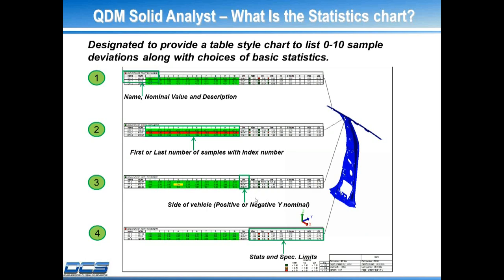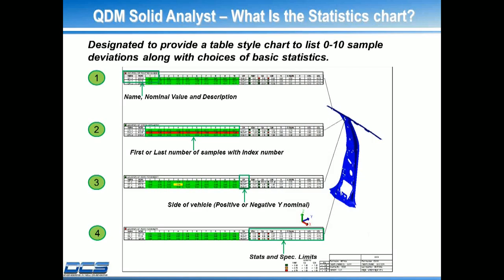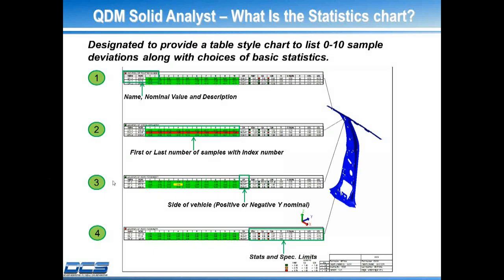It'll say 'center' if your Y-coordinate is 0.0. It's going to say 'left' if you have a negative Y-nominal. It's going to say 'right' if you have a positive Y-nominal for all your features. But more importantly, you have your last section here with all your statistics: your spec limits, your number of samples, your six sigma, your range, your capability indexes, along with your X-bar mean.